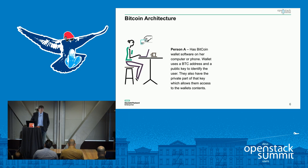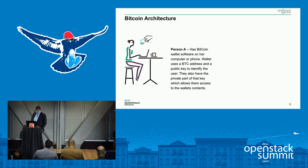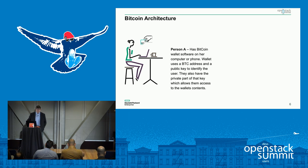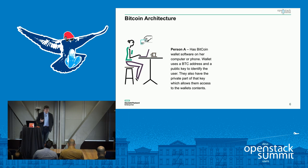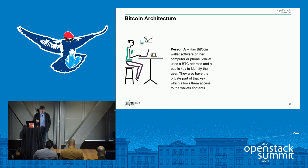Person A has Bitcoin wallet software on their PC, phone, watch, or they can use a website. What a wallet essentially is, is a Bitcoin address — a unique identifying address that identifies that individual's wallet and contains their currency, like the wallet in your pocket.